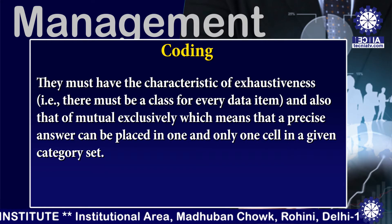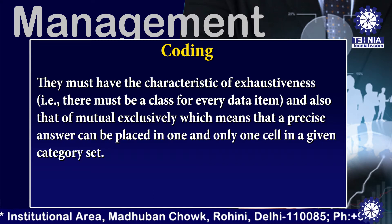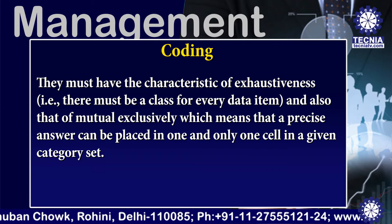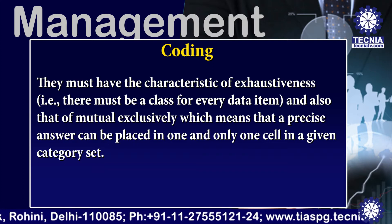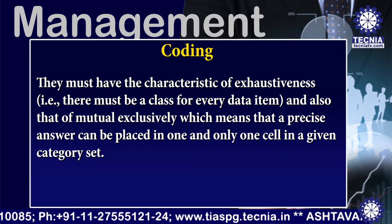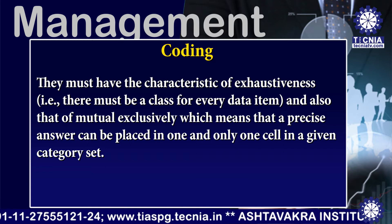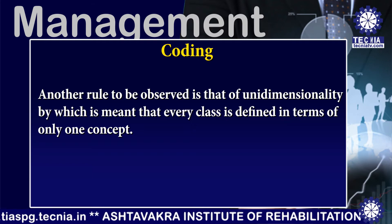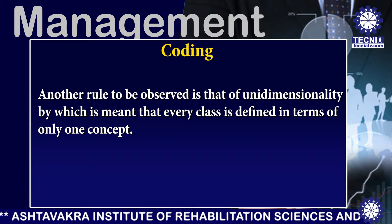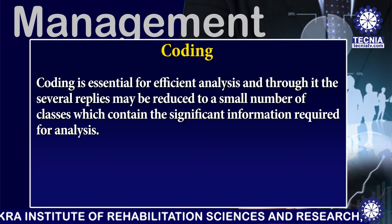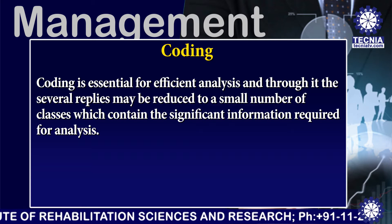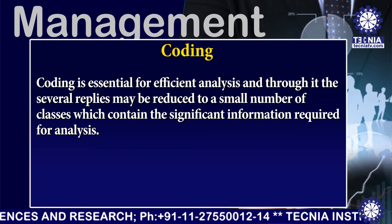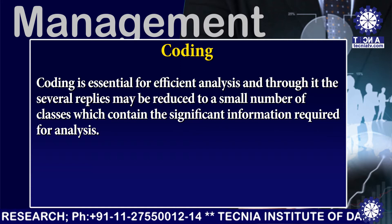They must have the characteristics of exhaustiveness and mutual exclusivity, which means that a precise answer can be placed in one and only one cell in a given category set. Another rule to be observed is that of unidimensionality, by which is meant that every class is defined in terms of only one concept. Coding is essential for efficient analysis, and through it the several replies may be reduced to a small number of classes which contain the significant information required for analysis.